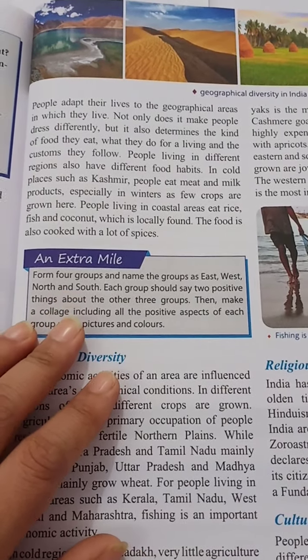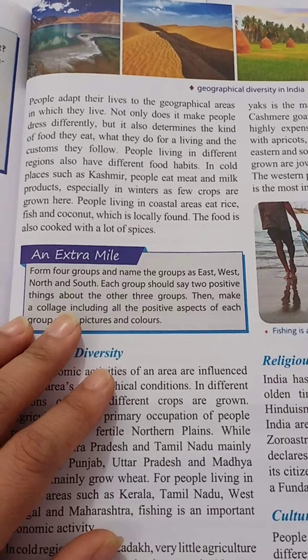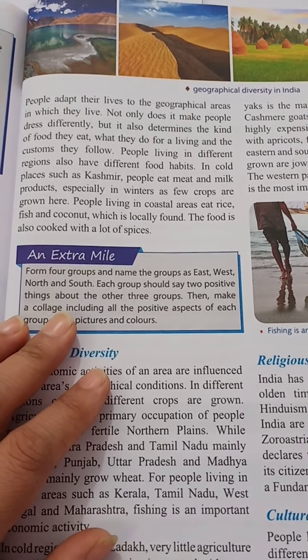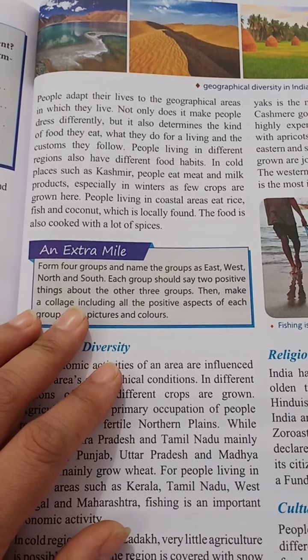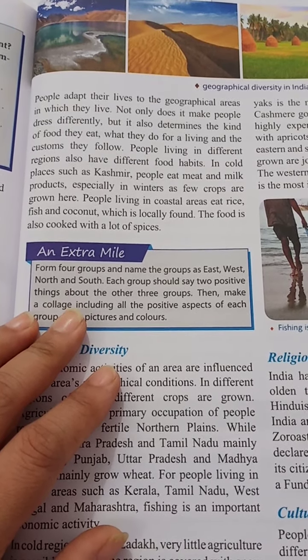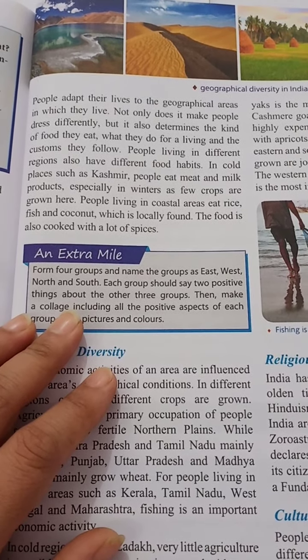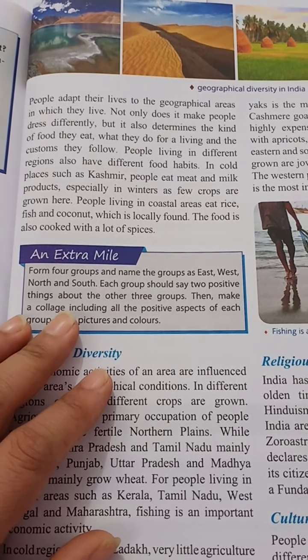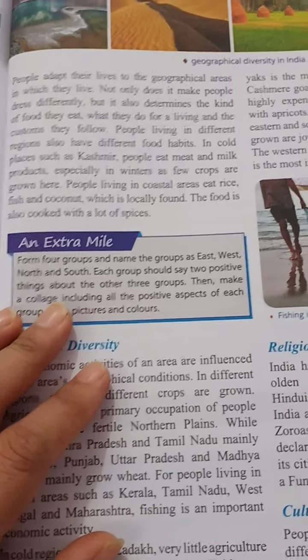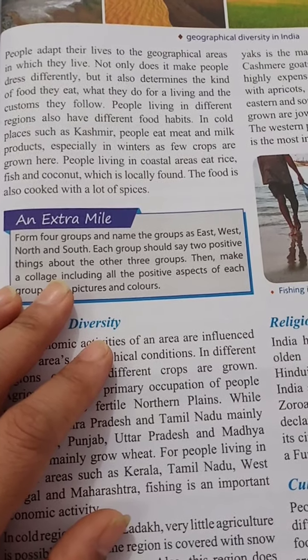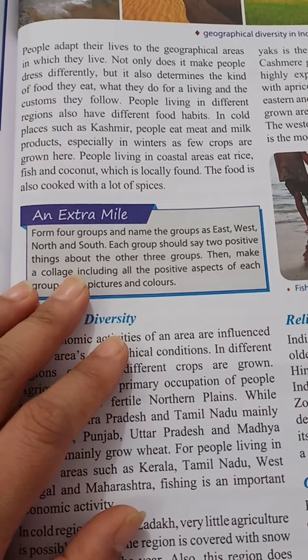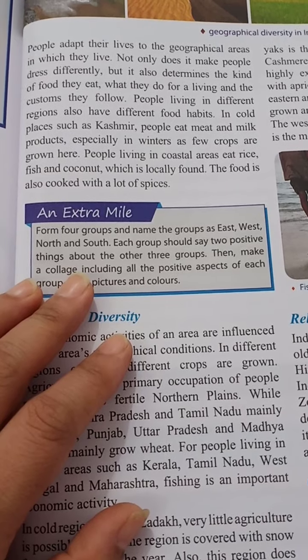People adapt their lives to the geographical areas in which they live. Not only does it make people dress differently, but it also determines the kind of food they eat, what they do for a living, and the customs they follow. People living in coastal areas do fishing, those in fertile areas do farming, and those in the mountains do rearing of animals.